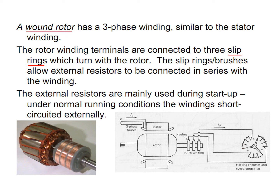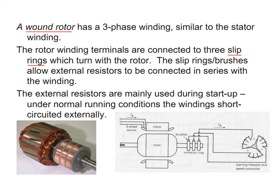External resistances are mainly used during start-up: current flows through resistance and back to the other terminal. After start-up, we short-circuit by rotating the arrangement. This gives flexibility, but it is expensive. So in simple induction motors, squirrel cage rotors are used. This is the complete cutaway diagram of the motor showing the stator windings and the rotor.